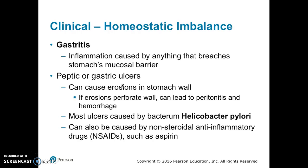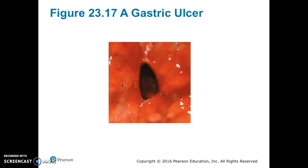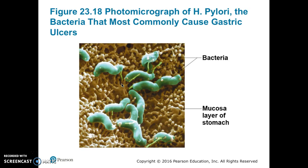Gastritis is the inflammation of the stomach caused by anything that breaches the mucosal barrier. Peptic or gastric ulcers can erode and even perforate the stomach wall, which can lead to peritonitis and hemorrhage. Most ulcers are caused by the bacterium Helicobacter pylori; other causes include NSAIDs like aspirin. This is a picture of a gastric ulcer, and this is a picture of the bacterium Helicobacter pylori, a major cause of stomach ulcers.